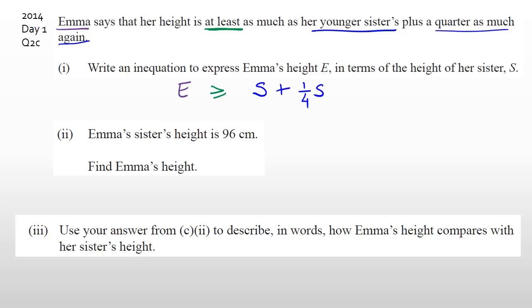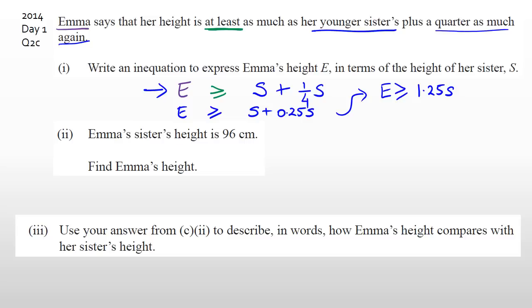If you had done this whole question with an equals sign, the highest grade you'd get is probably a merit. But by putting that greater than or equal to symbol, and answering the rest correctly, you are looking at an excellence. So I can write E is greater than or equal to S plus 0.25S, which simplifies to E is greater than or equal to 1.25S. You don't need to simplify to 1.25S — that first line is fine too — but you must have greater than or equal to.